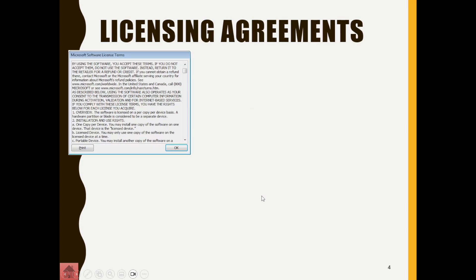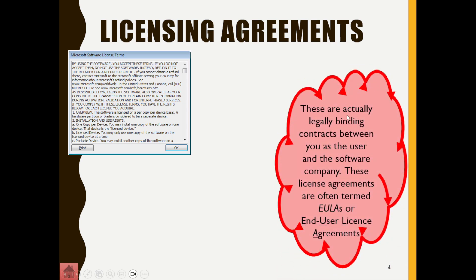Now very importantly, there's something called a licensing agreement. When you install something — whether it's an app on your phone — and you click next, next, next, a license agreement comes up and you click 'I agree.' What that actually means is it's a legally binding contract between you as the user and the software company, agreeing on how to use that software on your device. These license agreements are often termed EULAs — End User License Agreements.